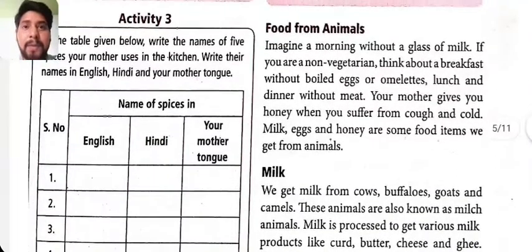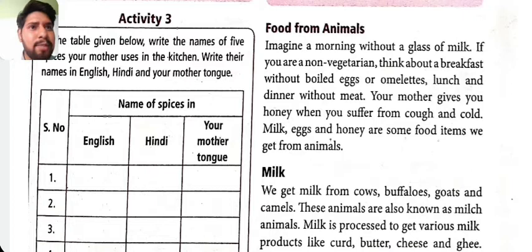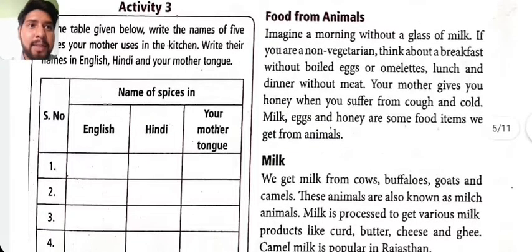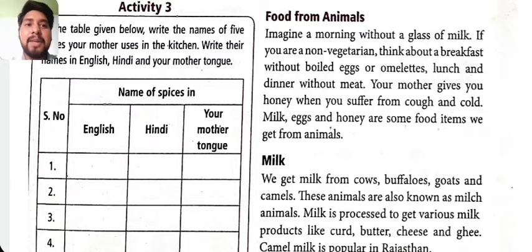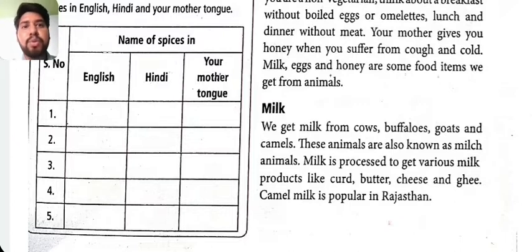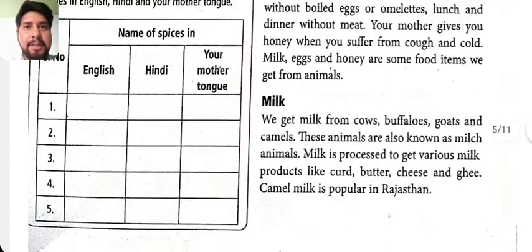Can you imagine your morning without a glass of milk? If you are a vegetarian, think about breakfast without milk, and if you are a non-vegetarian, think about breakfast without a boiled egg or omelet. Your mother gives you honey when you have a cough or cold. Milk, eggs, and honey are food items we get from animals. We get milk from cows, buffaloes, goats, and camels. Camel milk is most popular in Rajasthan. Milk products include curd, butter, cheese, and ghee.